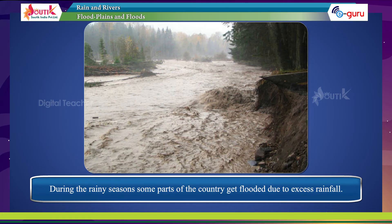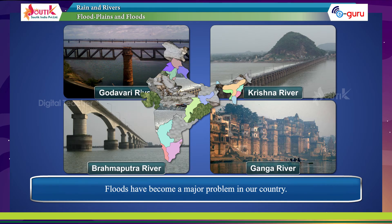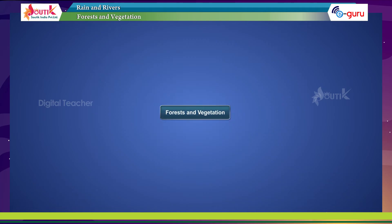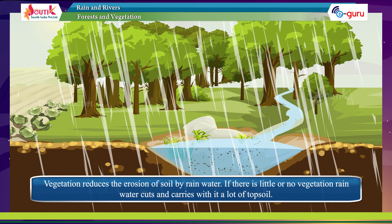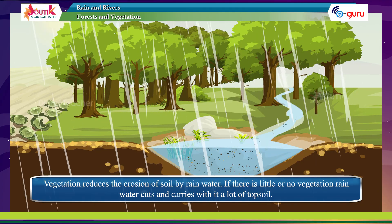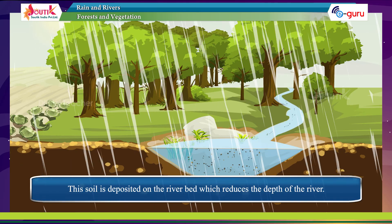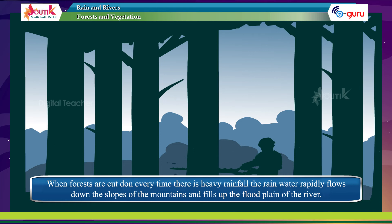All major rivers have their flood plains. During the rainy season, some parts of the country get flooded due to excess rainfall. Floods occurring in rivers like the Krishna, Godavari, Brahmaputra, and the Ganga have become a major problem in our country, causing severe damage to people, crops, livestock, and vegetation. Vegetation reduces the erosion of soil by rain water. If there is little or no vegetation, rain water cuts and carries a lot of soil into the river bed, reducing its depth. Vegetation allows water to flow slowly into the river, thus preventing sudden flooding. When forests are cut down, this protection is lost.